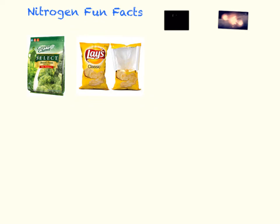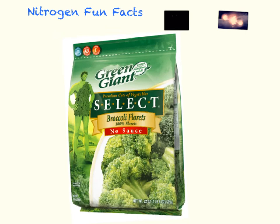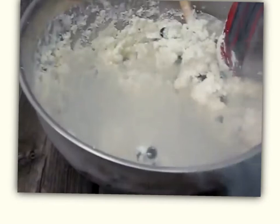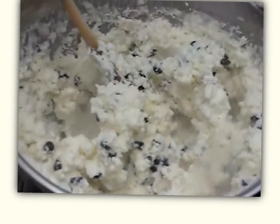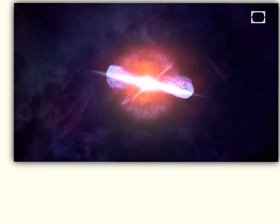Here are some fun facts about nitrogen. Nitrogen can be used to freeze foods, keep foods fresh in packages, and can be used to make ice cream — or nice cream — very quickly. Nitrogen is also formed when different elements combine or fuse during a supernova.